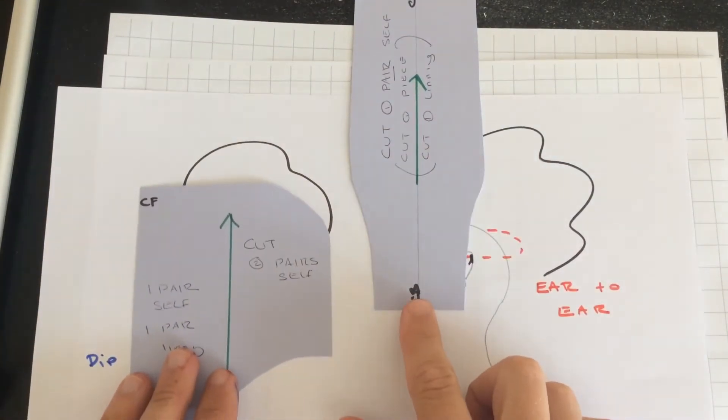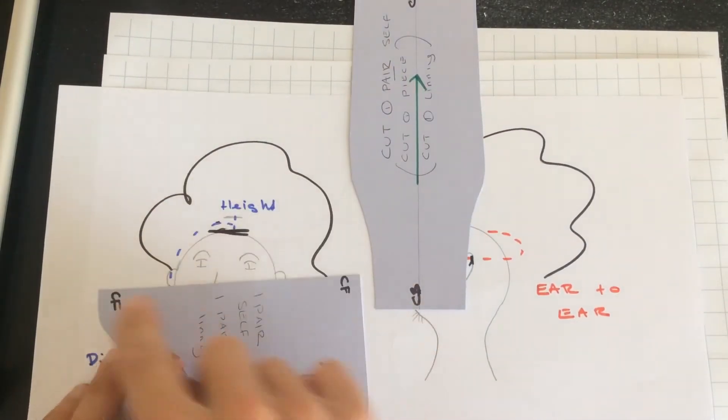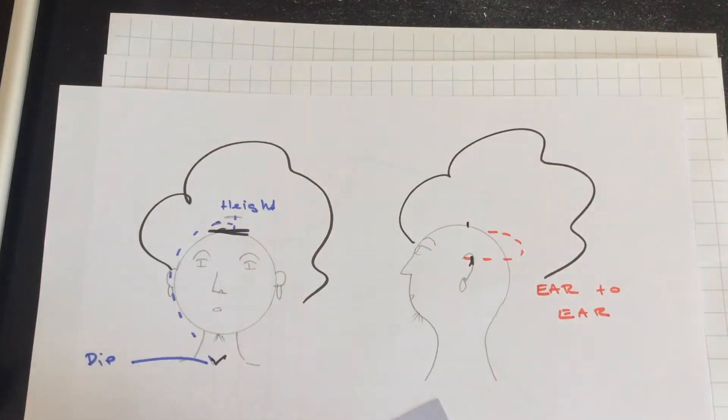So that's the center back there and that's the center front. The center front runs up there. To get that measurement, we need to get that shape to be able to cut that. We need a couple of measurements.